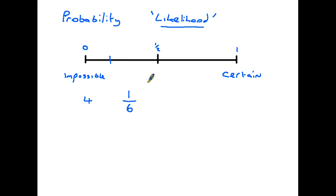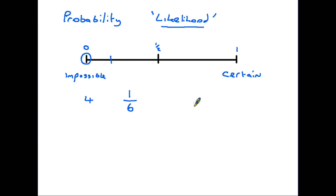Let's ask ourselves: how likely is it that you are going to roll a seven on a normal dice? Well, there isn't a seven, so it is impossible — it has a probability of zero. On the other hand, if you ask what is the probability of rolling any number between one and six, you are certain to roll such a number because those are all the options. Therefore that has a probability of one.